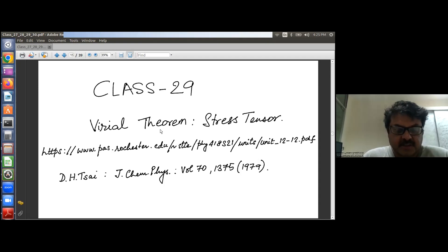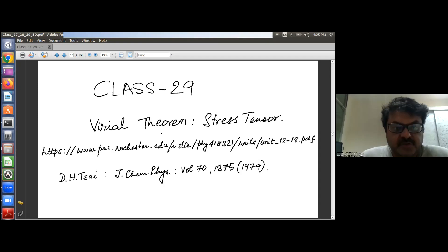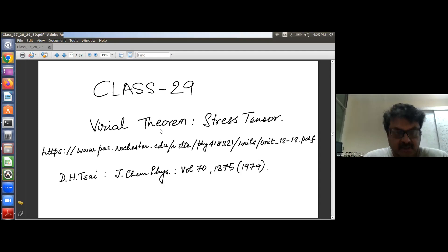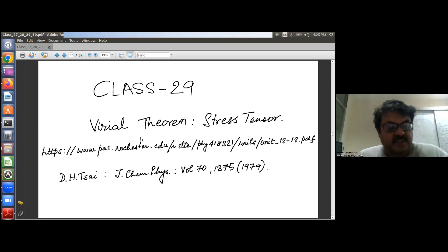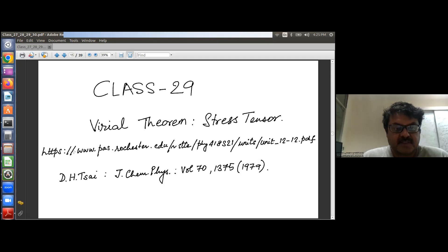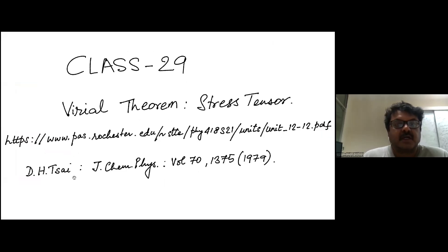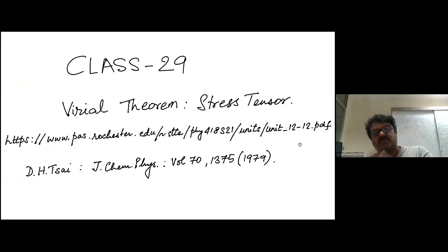In Reif, there isn't a section on the Virial Theorem. In other books, including Karda, Patria, and Hwang, there are. In some books they are done in the microcanonical ensemble. I find the discussion of the Virial Theorem in the canonical ensemble to be more appropriate and easy to understand. What I am presenting is essentially from www.pas.rochester.edu — you can search 'Virial Theorem Rochester' to find it.